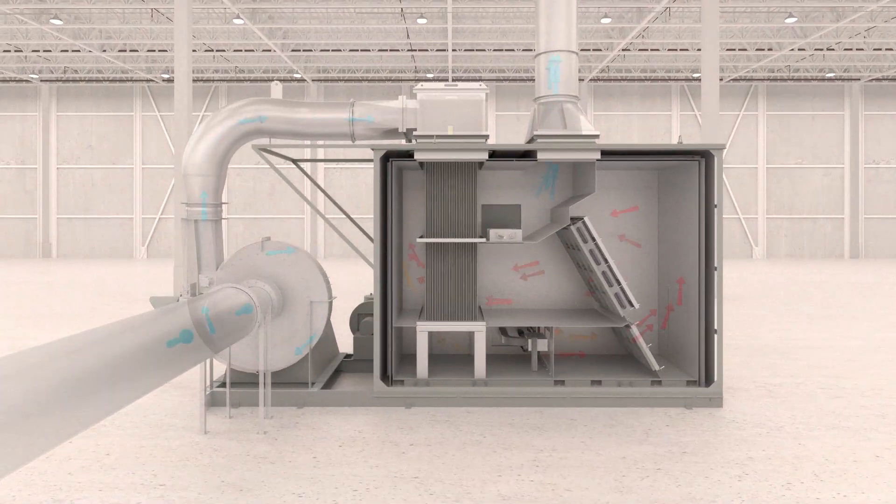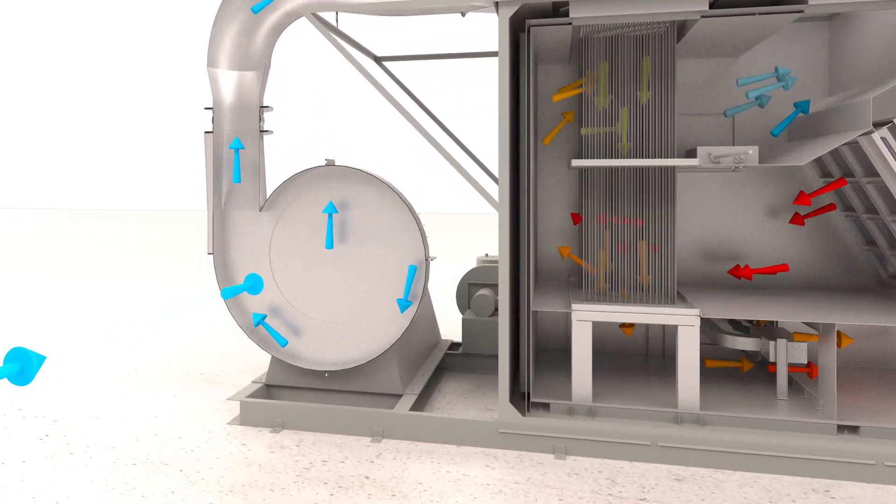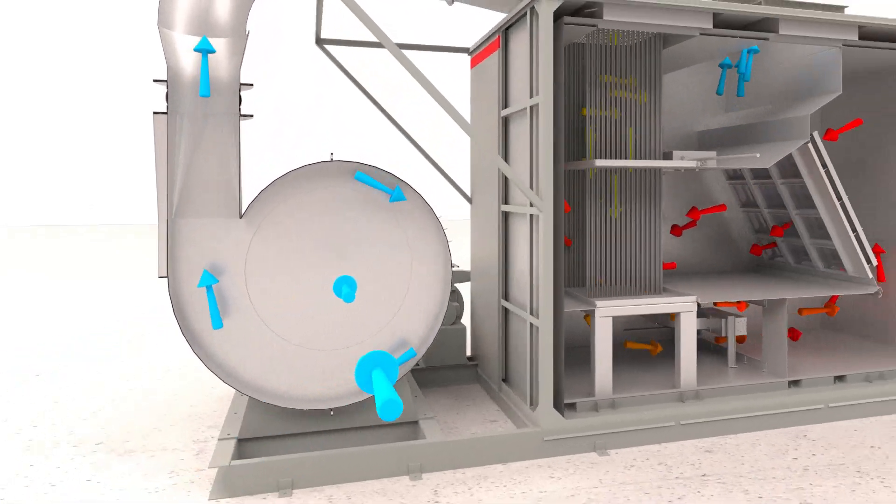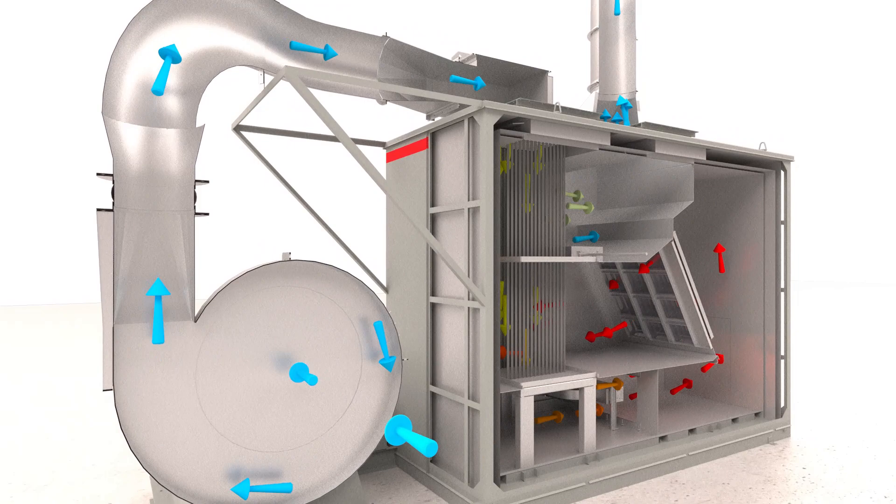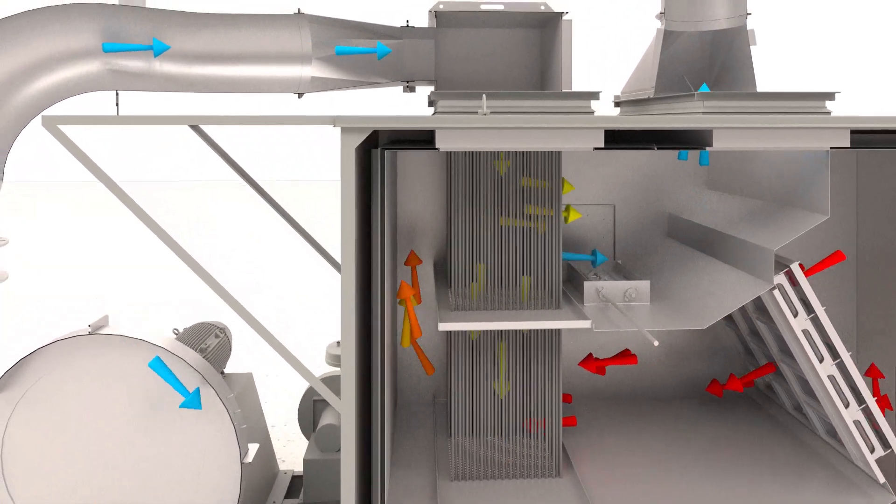Pollutant-laden process gas is either pushed or pulled into a metal heat exchanger inside the oxidizer via a system fan. The contaminated air stream is progressively heated while traveling through the heat exchanger towards the catalyst beds.